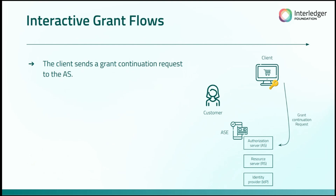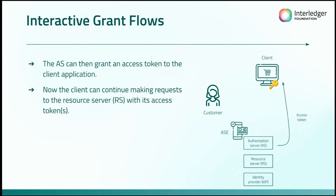The client is then able to take that information and make a grant continuation request to the authorization server, saying the customer did consent to this — can I please get that access token now? At that point, the authorization server can grant an access token to the client application. The client can then use that access token to make its request to the resource server.